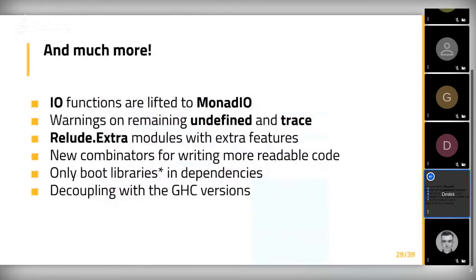Relude has much more. All IO functions are lifted to MonadIO, because you use Relude in applications mostly, and in applications you have custom monads. If you want to print something to the terminal or read files, you also need to lift standard functions from base to MonadIO, which is inconvenient. We also have warnings for remaining undefined and trace in code. While developing Haskell applications, it's okay to use undefined as a placeholder or trace to inspect pure functions, but these shouldn't remain in production applications — so Relude warns you when you leave these usages in your code.